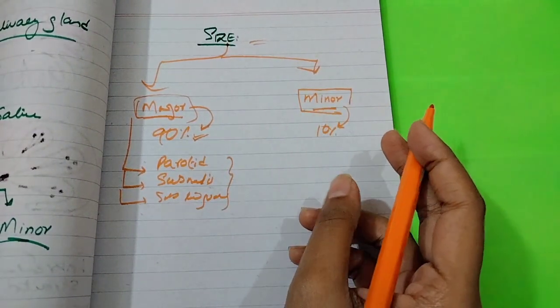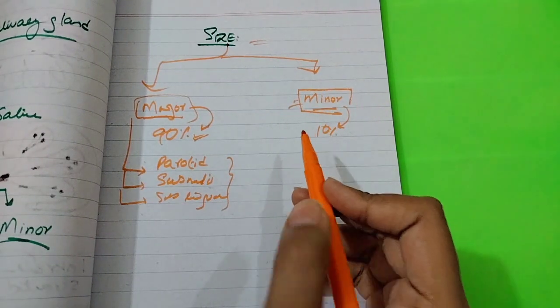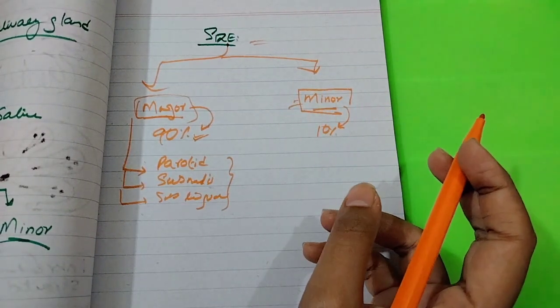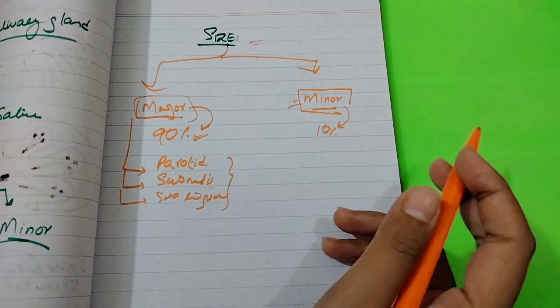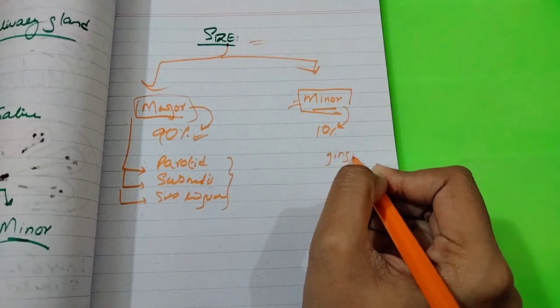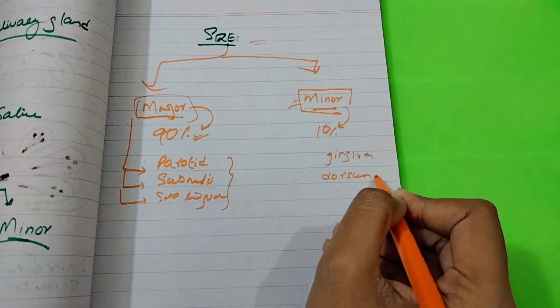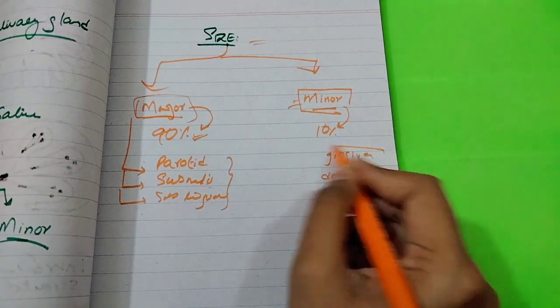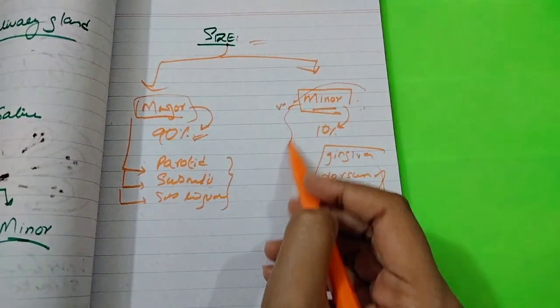We don't need to remember the names of the minor glands because they're small and found in areas like the palate and tongue. Just remember that we don't have minor glands in gingiva and dorsum of tongue. The minor glands are not so important.